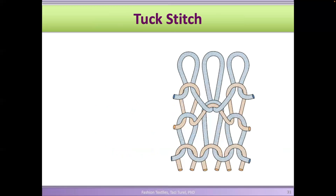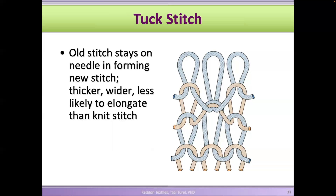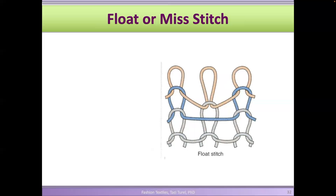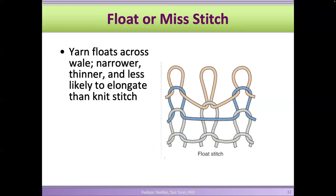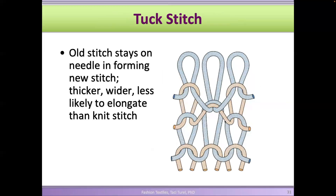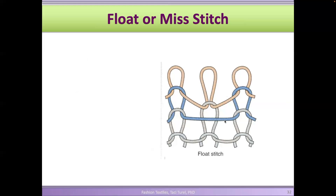There are a couple of designs you can do with knit fabrics. A tuck stitch is one — in a tuck stitch, the old stitch stays on the needle while you catch new yarn to make another loop, so you end up with two loops. This creates a different look on the fabric — one loop is stretched out a little more, leaving more of a gap. There's also a float or miss stitch, where the hook of the needle doesn't catch the yarn, so it just stays like a float.